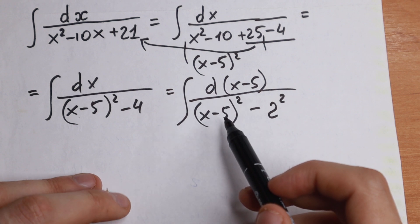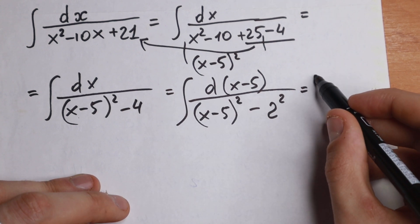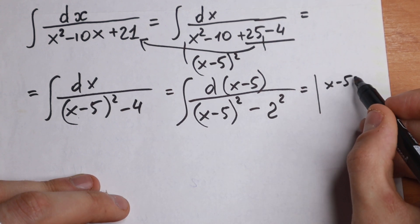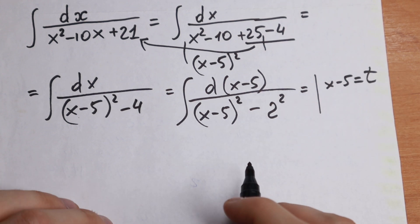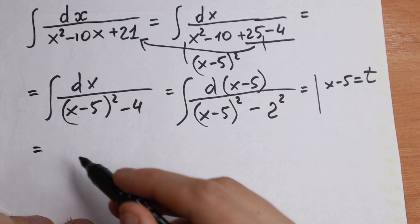And this will be our formula. If we substitute x minus 5 equal to t, we will have our table case. This is not easy table case, but this is high mass case, table case.